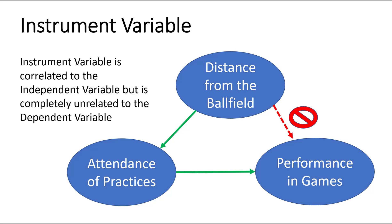A way that we can assess this is by including what's called an instrument variable. An instrument variable is correlated with your independent variable but should be completely unrelated to the dependent variable. Using our baseball example, an instrument variable could be distance from the ball field — the distance from the player's home to the ball field. That might influence how many practices they attend, but distance from the ball field probably has no relationship with how well they perform in games. That would be an instrument variable we could use to assess if indigeneity is present.